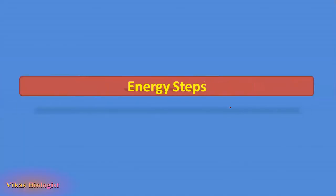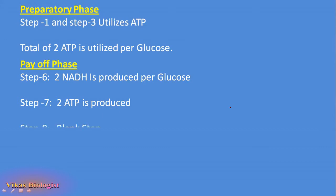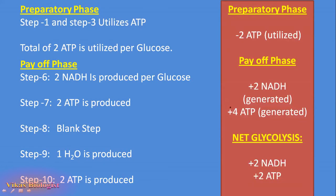Looking at the energy steps carefully, in the preparatory phase step 1 and step 3 utilize ATP. A total of 2 ATP utilization per glucose occurs in the preparatory phase. In the payoff stage, step 6 involves 2 NADH production per glucose, step 7 produces 2 ATP, step 8 is a blank step where nothing is being produced, step 9 involves 1 water molecule production, and step 10 produces 2 ATP. All together this shows the preparatory phase utilization of 2 ATP and the payoff generation of 2 NADH and 4 ATP. Remember the net glycolysis reaction you are going to get 2 NADH and 2 ATP. This is the total net glycolysis energy.